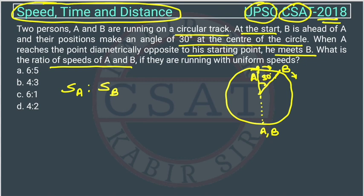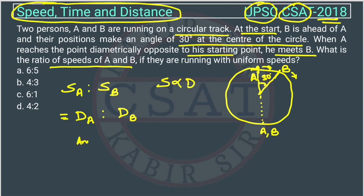The speed ratio will be equal to the distance ratio between A and B, because speed and distance are proportional to each other. That will be equal to the distance traveled by A and B. The distance traveled by A and B will be proportional to the angle traveled by them. It will be equal to the angle traveled by A and the angle traveled by B. A traveled 180 degrees — from here to here, this is 180 degrees.